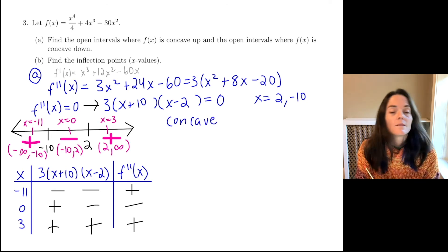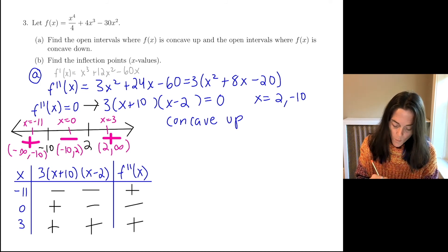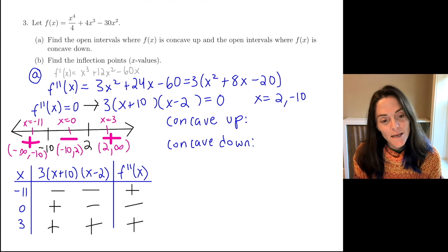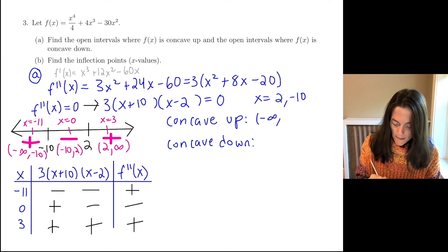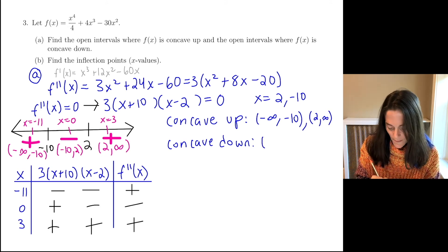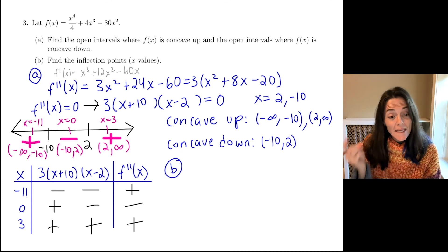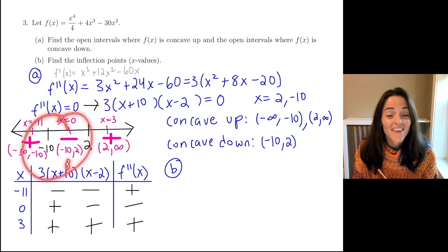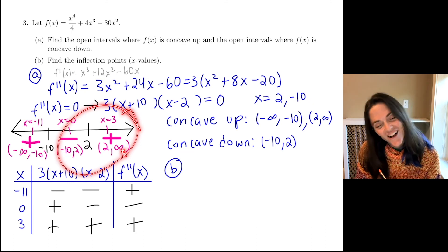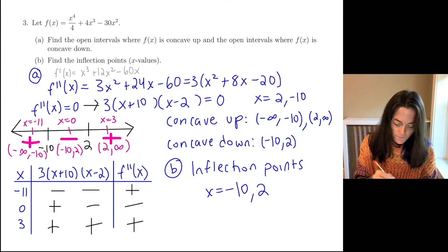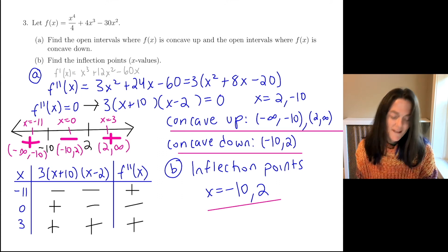Now I'm ready to give my answer. Concave up everywhere I see a plus: minus infinity to minus 10 and 2 to infinity. Concave down everywhere we see a minus, which is just one open interval: minus 10 to 2. That's the answer for letter A. Now letter B, inflection points: at minus 10, we are switching — concave up on one side, concave down on the other. Also at 2, we are switching — concave down on one side, concave up on the other. So both of these x values are inflection points: negative 10 and 2. That's the answer for letter B.